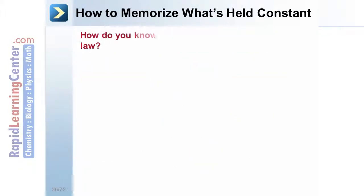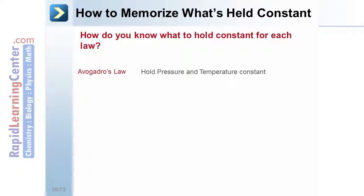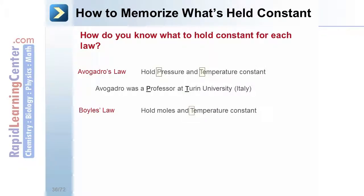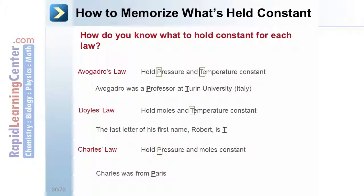How can you remember what to hold constant for each gas law? Use these mnemonics. Avogadro's law holds pressure and temperature constant. Avogadro was a professor at Turin University. Boyle's law holds moles and temperature constant. The last letter of his first name, Robert, is T. Charles law holds pressure and moles constant. Charles was from Paris.